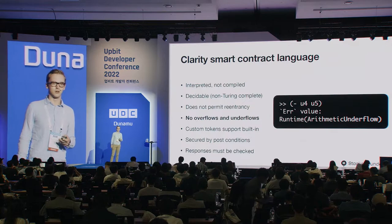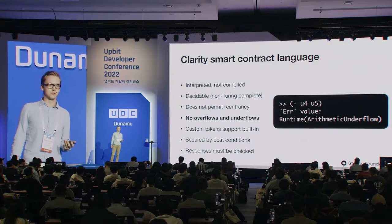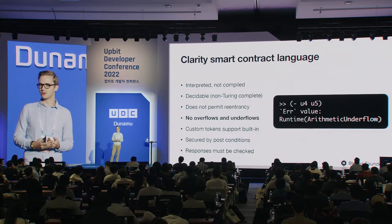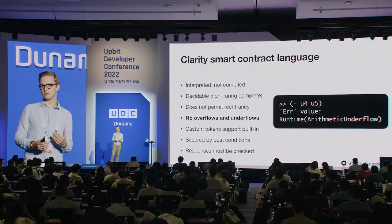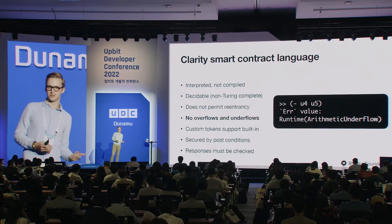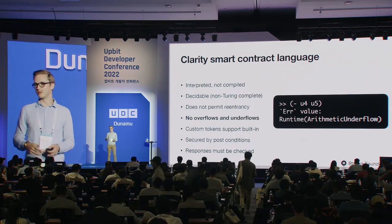Also at the language level, there are no integer overflows or underflows. An overflow occurs when a number reaches its maximum value and wraps around to the minimum; underflow is the reverse. This has caused issues in languages like Solidity, either freezing protocols or allowing adversaries to drain tokens. Clarity does not permit this — if you attempt it, you get an underflow runtime error and the transaction aborts.